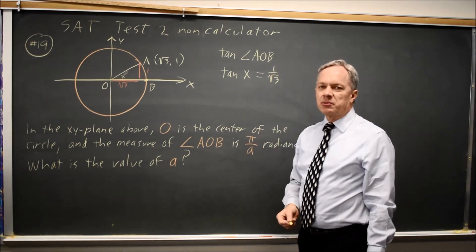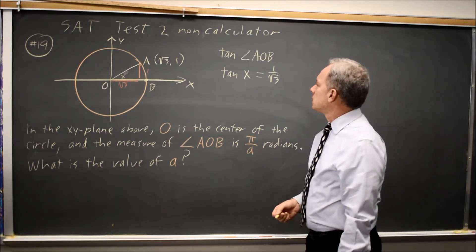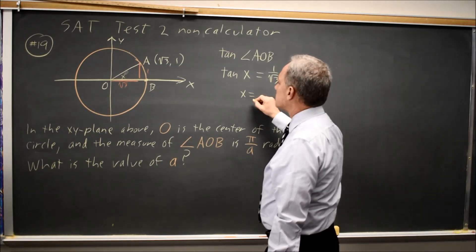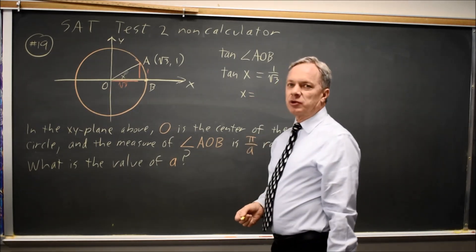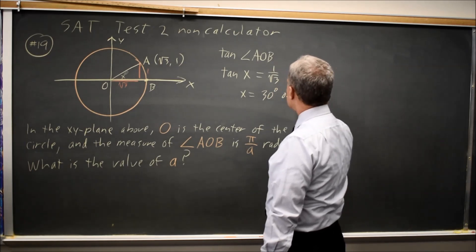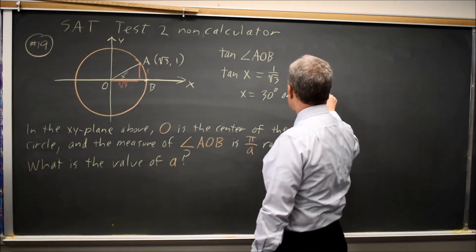If we have memorized the unit circle, we would know that X equals the angle with a tangent of 1 over root 3 is 30 degrees, or pi over 6 radians.